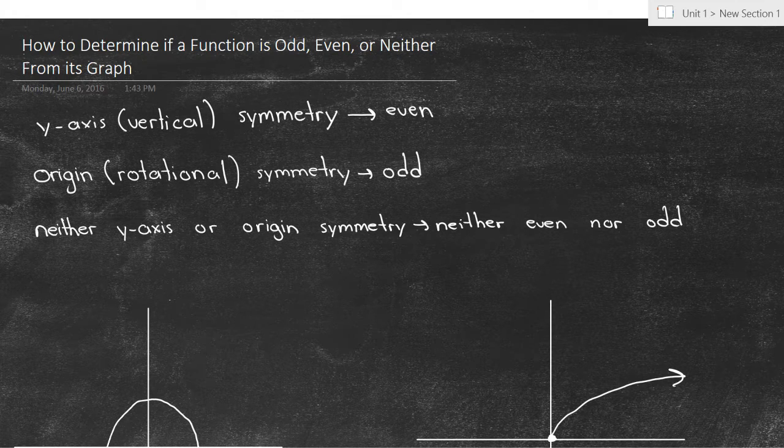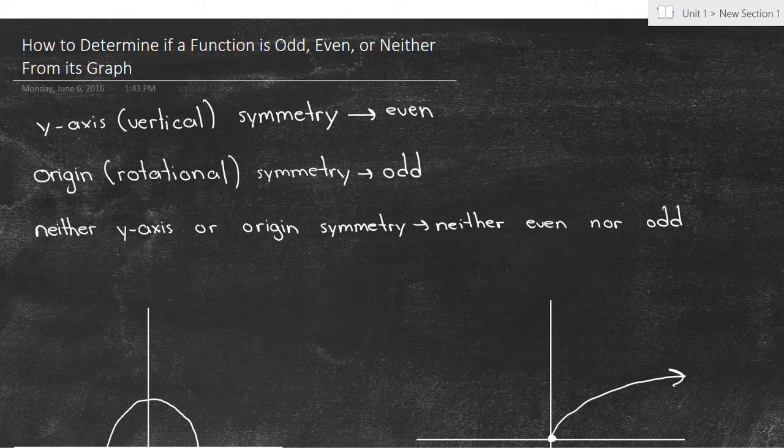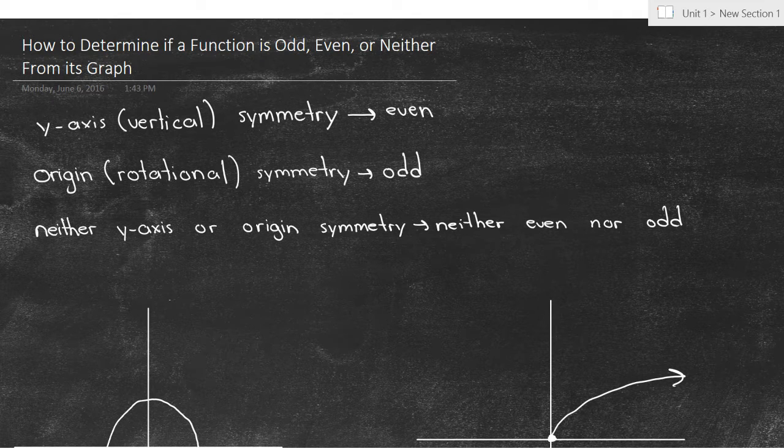So just think about it. You could turn the graph on its side, and it would still equal the same thing. And then if there's neither y-axis symmetry or origin symmetry, the function is neither even nor odd.